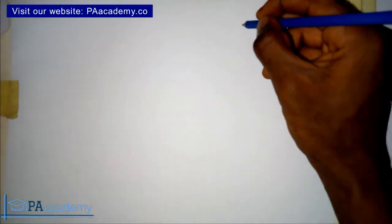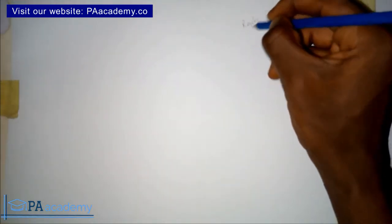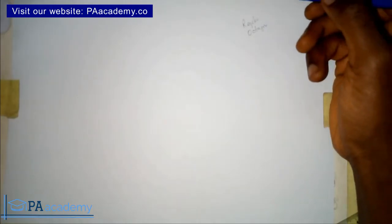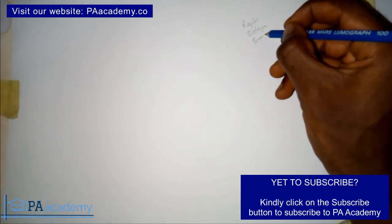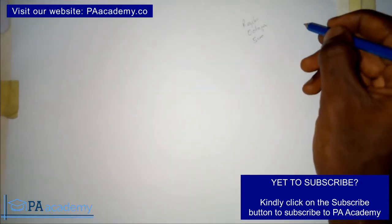Hello everyone and welcome to PA Academy. In this video I'm going to be showing you how to draw a regular octagon when given the length of the side. For this particular video I'm going to be using a side of 5 cm. A regular octagon means it has 8 sides.